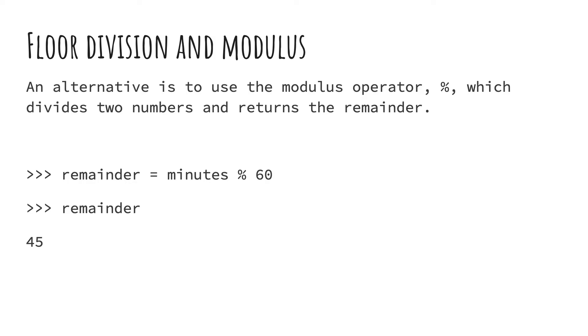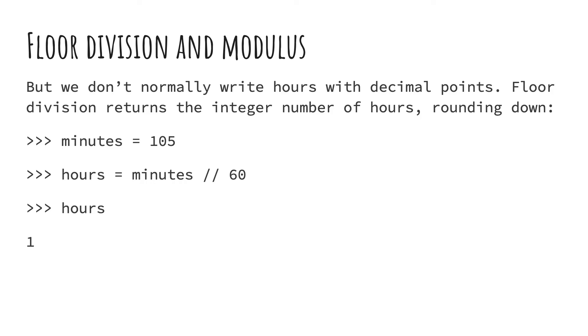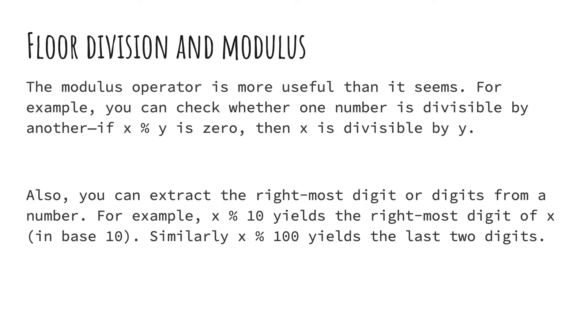So it only gets you the remainder bit. So minutes, whatever that was, I think it was 105. When we divide that by 60, there's 45 as the remainder. So we can get that with one symbol, one operation. Modulus.